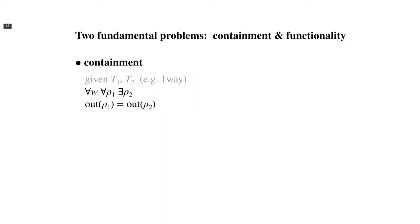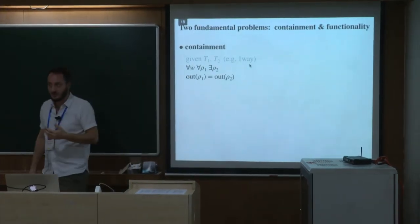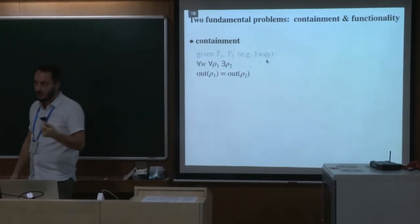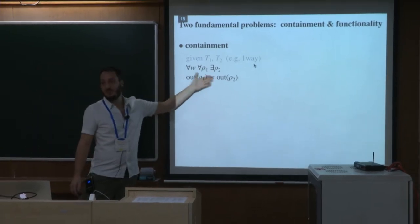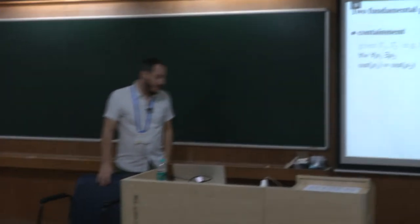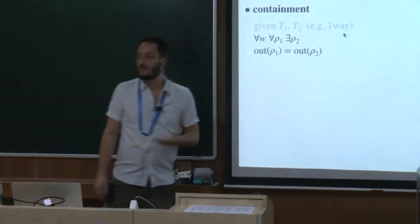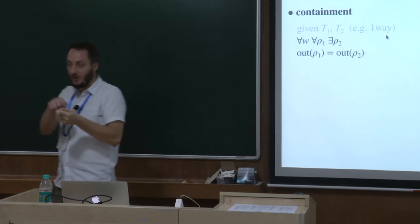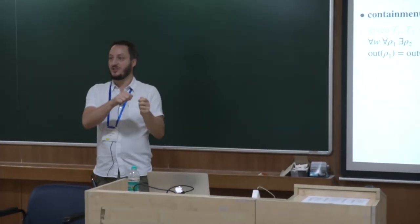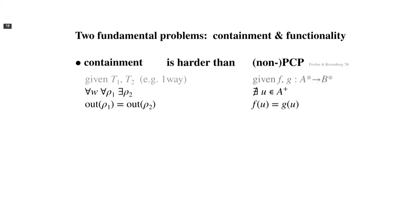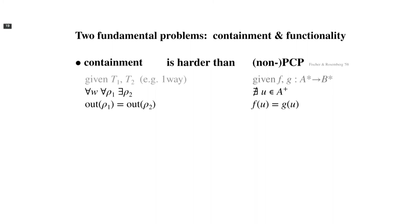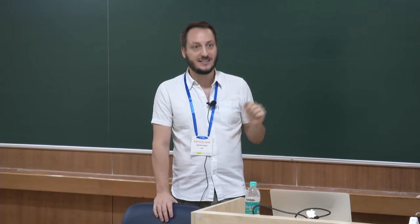Formally, containment means: for every input, for every run ρ1 of T1 on that input, there exists a run of T2 on the same input producing the same output as ρ1. This alternating quantification makes the problem hard. Not surprisingly, it is undecidable. The proof uses a reduction from the Post Correspondence Problem, an idea that also appears in trace automata and multi-tape automata.